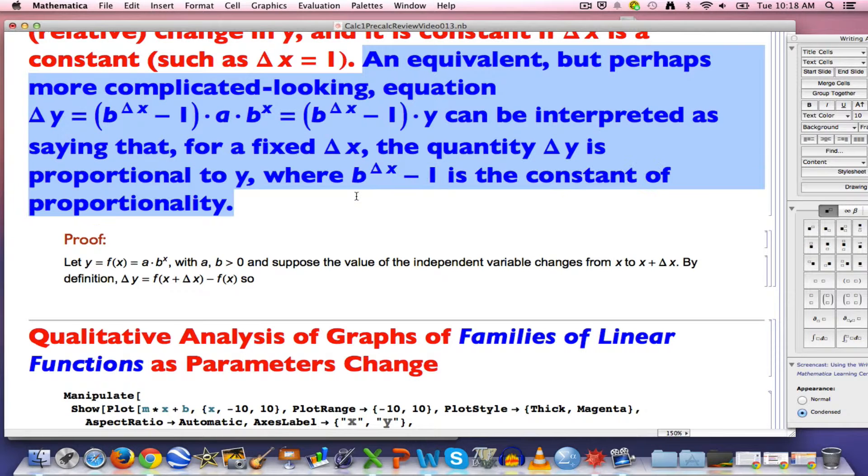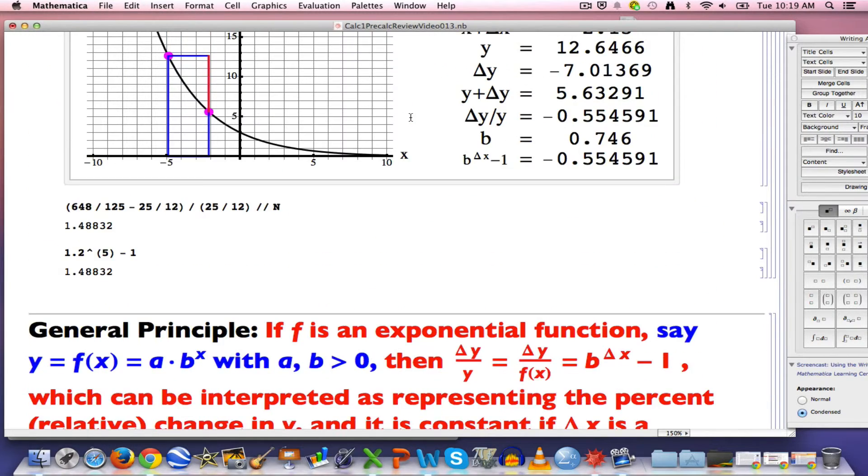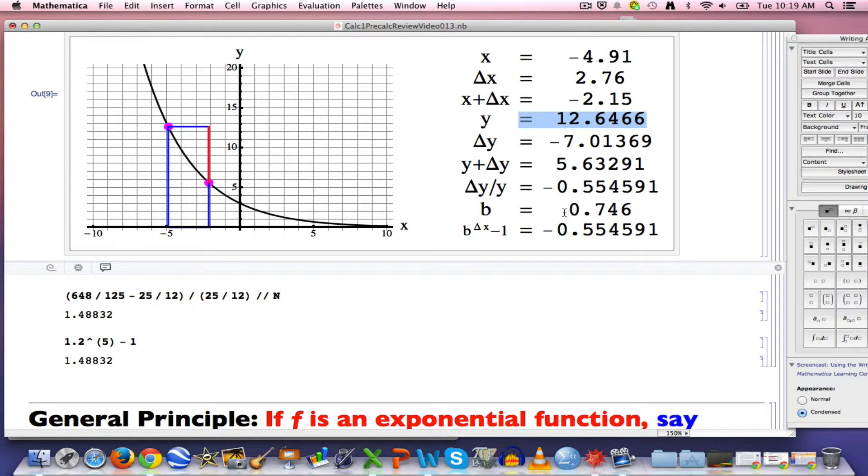Another way you can think of it is in terms of proportionality. Delta Y ultimately is proportional to Y when delta X is fixed, and the constant of proportionality is B to the delta X minus 1. That's the constant. In fact, if you look back up here, if you multiply this Y by B to the delta X minus 1 multiplied by negative 0.555, you should get the delta Y.